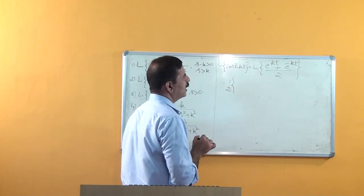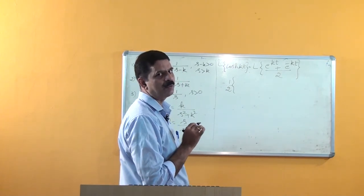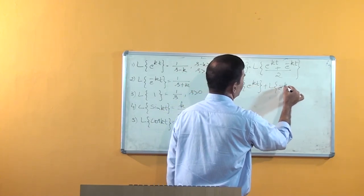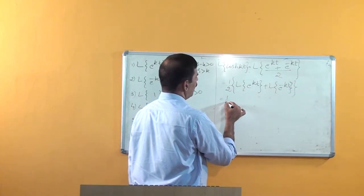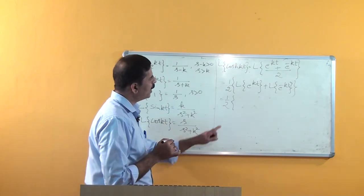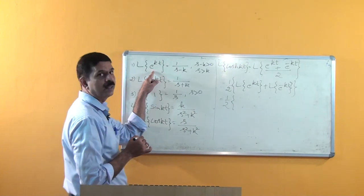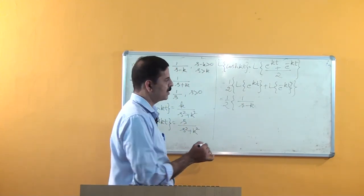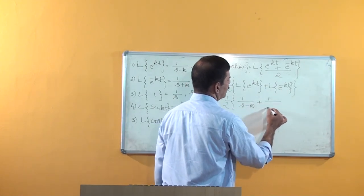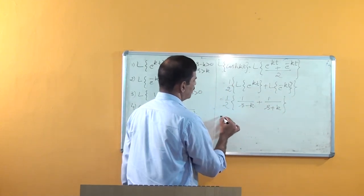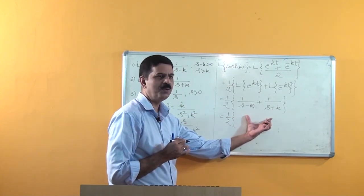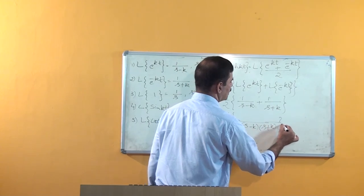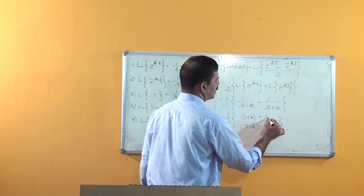Since the Laplace operator is a linear function, we can split this and write: half times [Laplace of e^(kt) plus Laplace of e^(-kt)]. Applying the formulas derived in the last class, this becomes half times [1/(s - k) + 1/(s + k)].